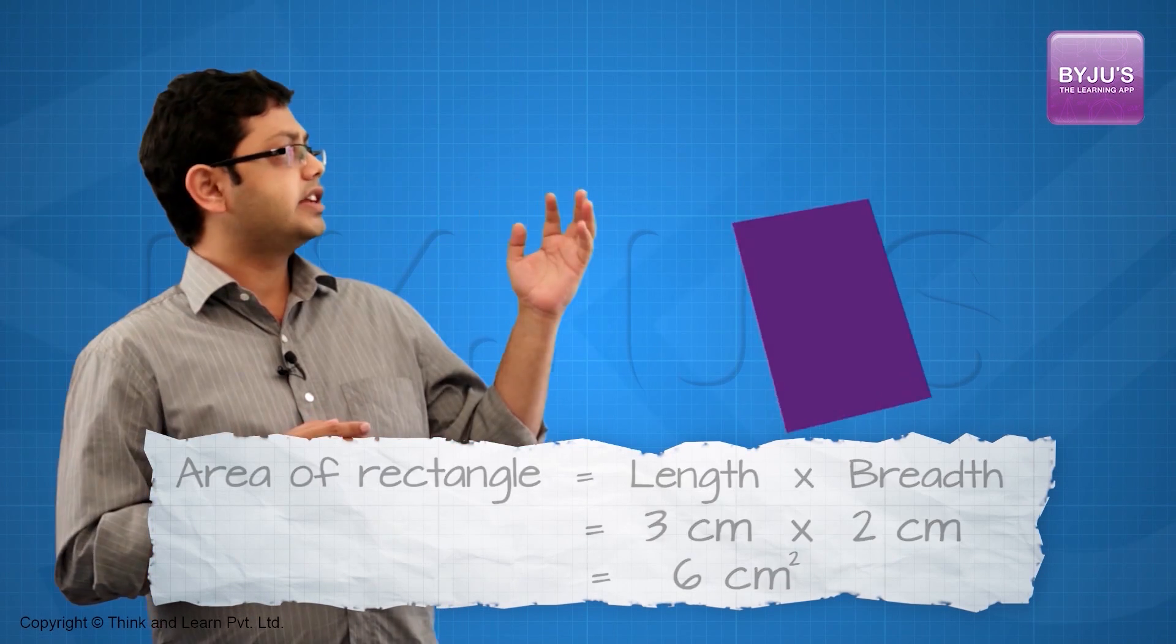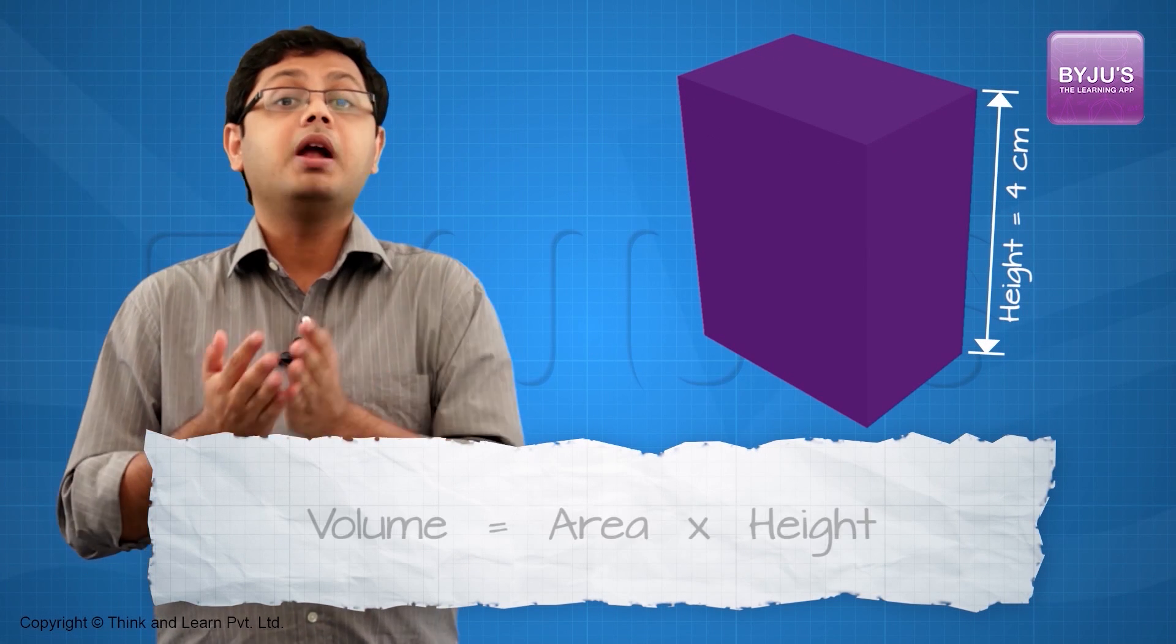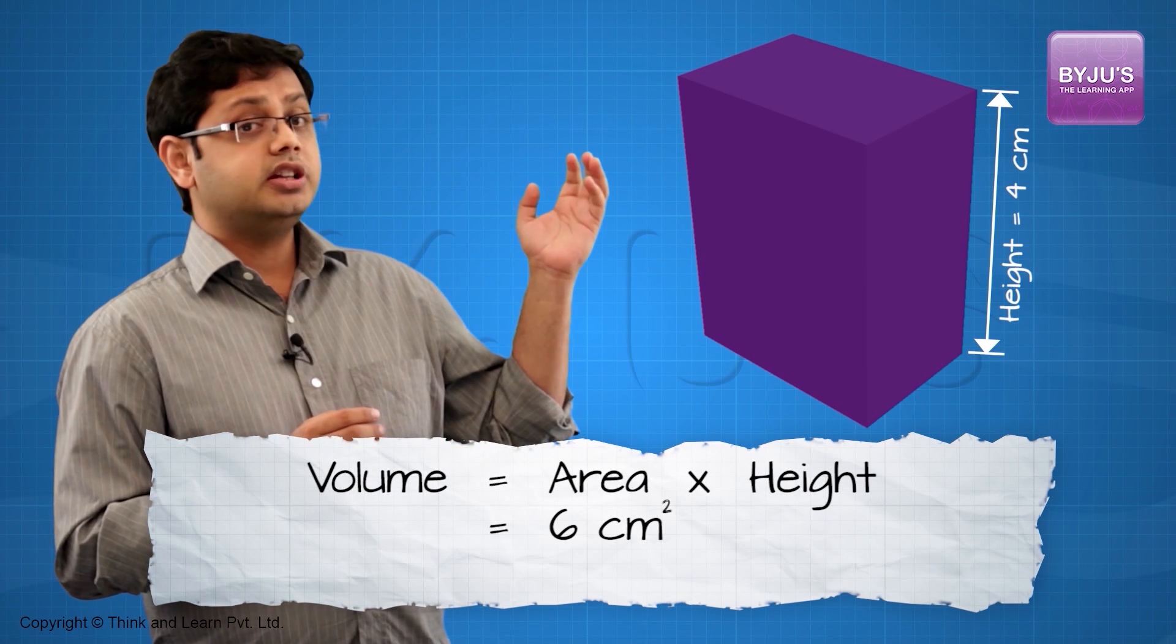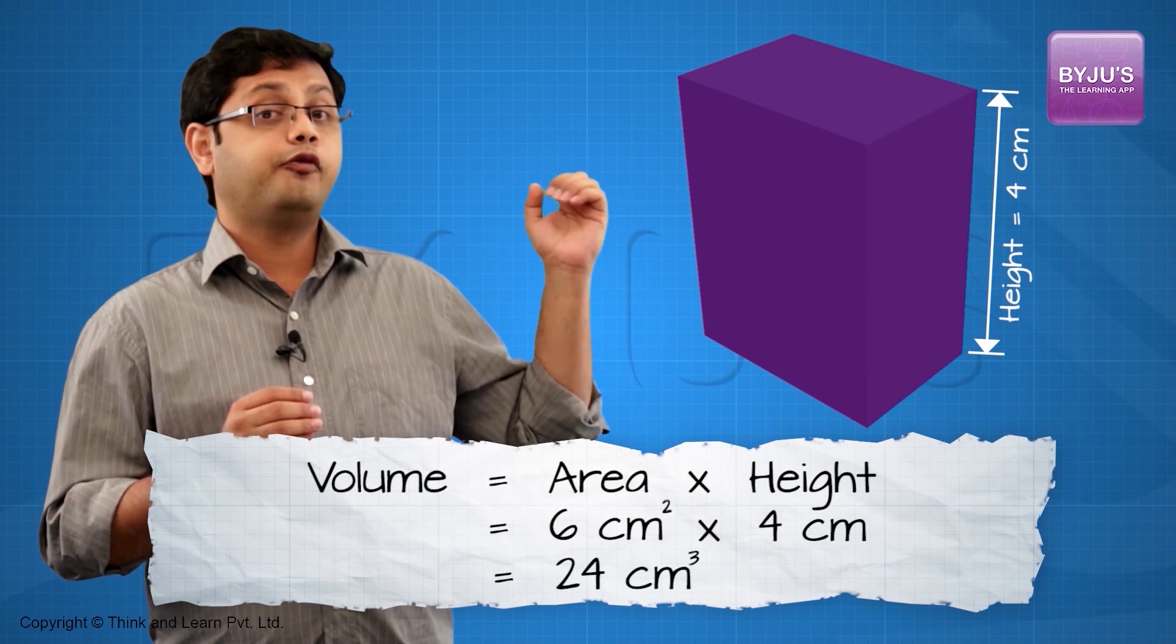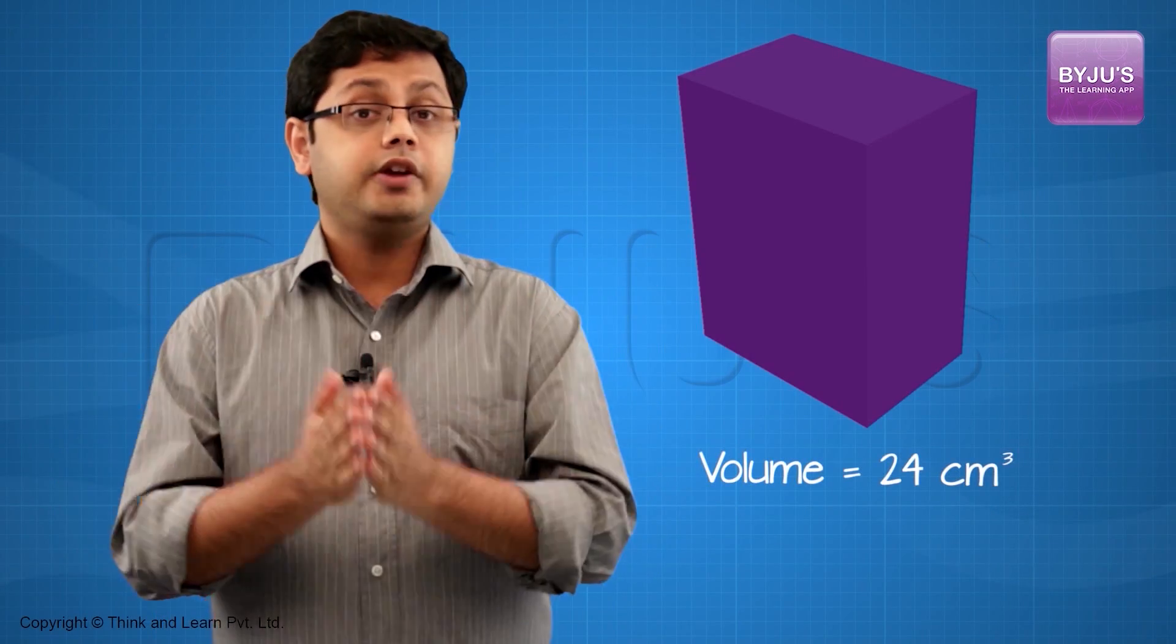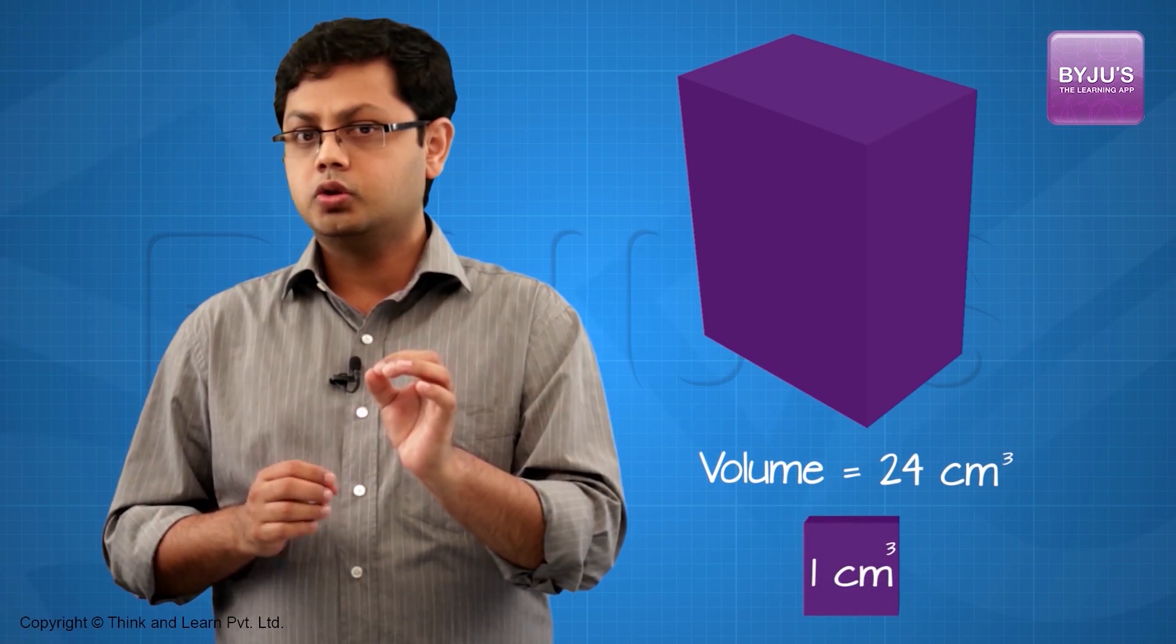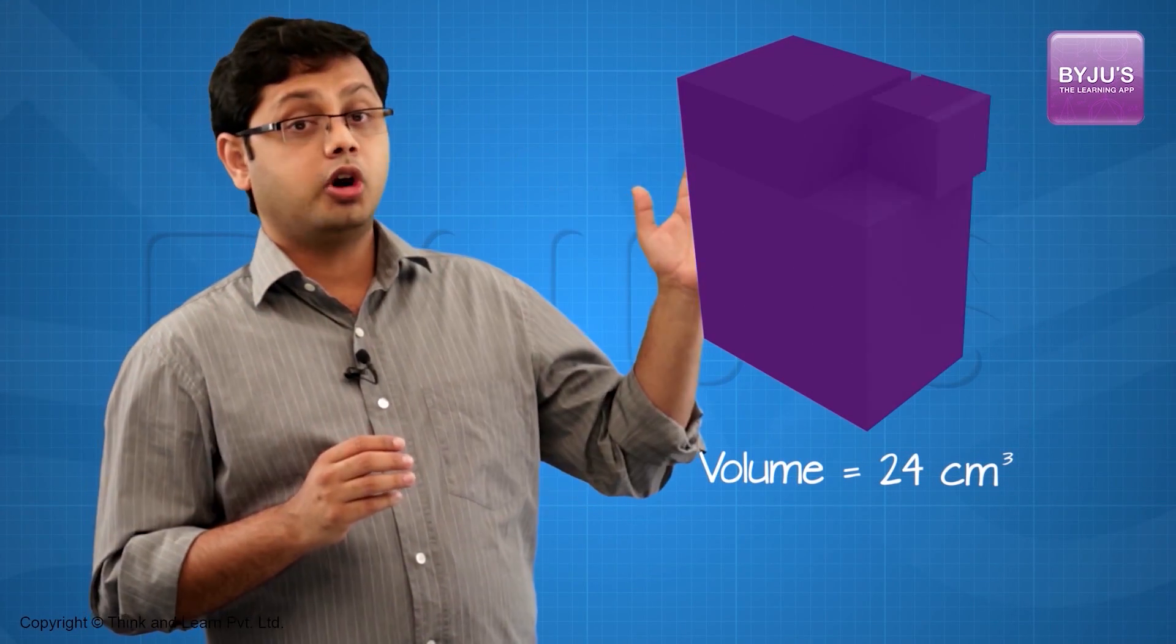Now let us give this rectangle a height of 4 cm. To find the volume, what will I have to do? I have to multiply the area with the height, which will result in 6 cm² times 4 cm, which is going to be equal to 24 cm³. So the volume of this cuboid is going to be 24 cm³. Why am I calling it a volume of 24 cm³? Because if I take a cube of volume 1 cm³, then exactly 24 of them would fit inside this cuboid.